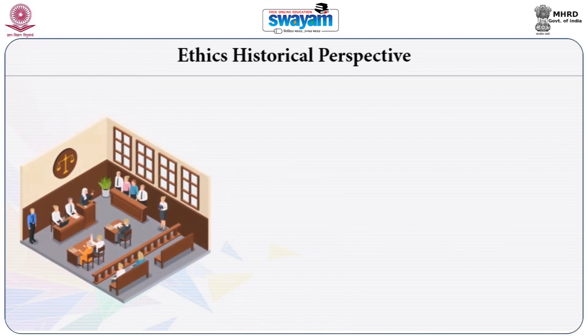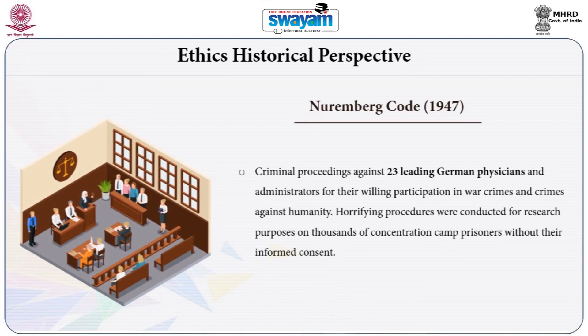Now let us look into the history of research ethics referring to some major developments. The Second World War is considered the most important landmark, mainly accounting for scientific medical experiments conducted on prisoners of war in concentration camps. The Nuremberg Code of 1947 is one such example, wherein criminal proceedings against 23 leading German physicians and administrators were conducted for their willing participation in war crimes and crimes against humanity.